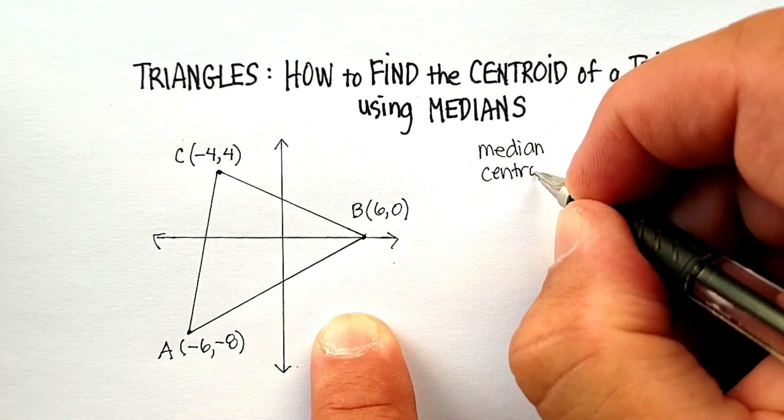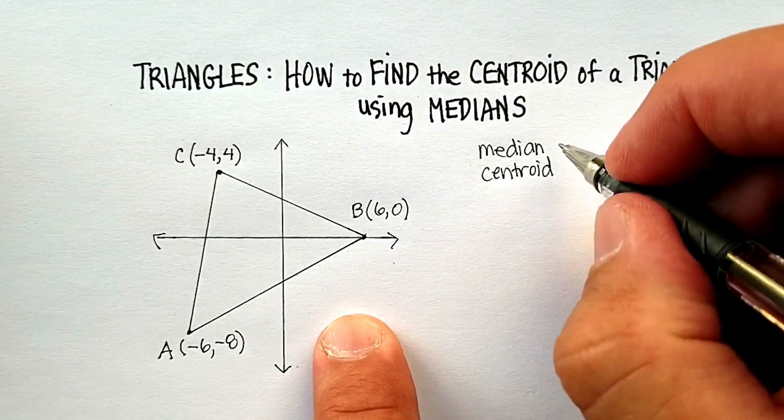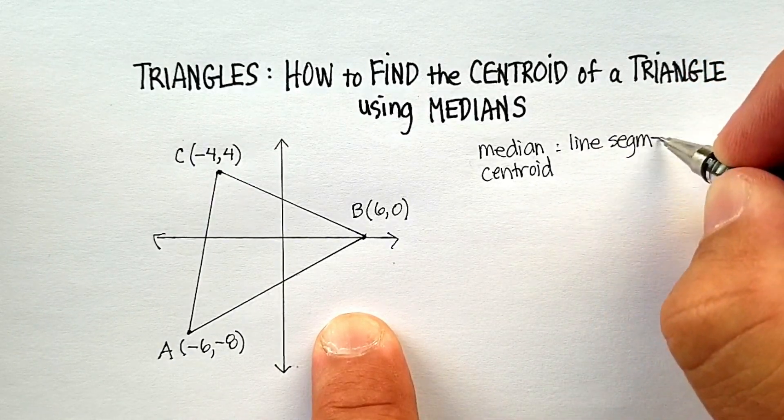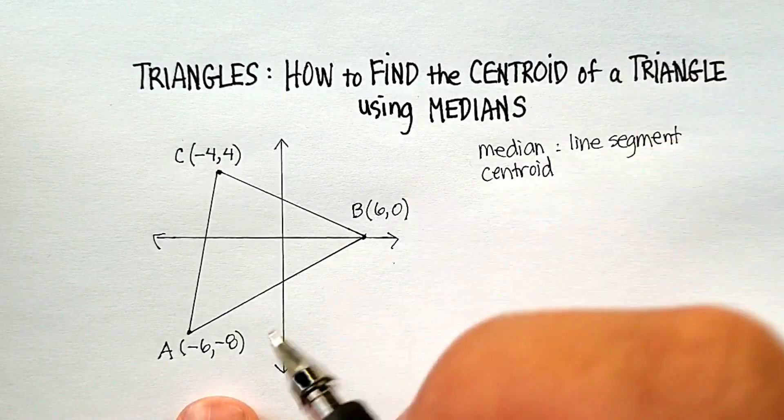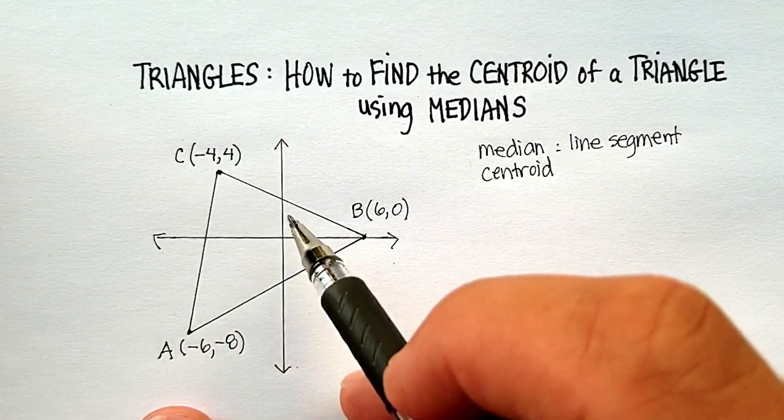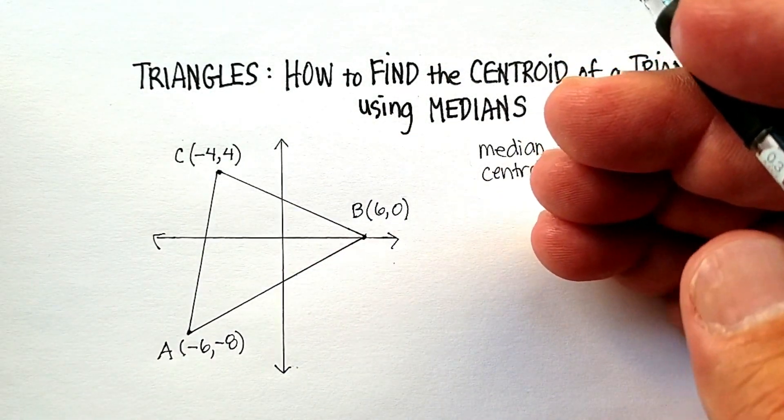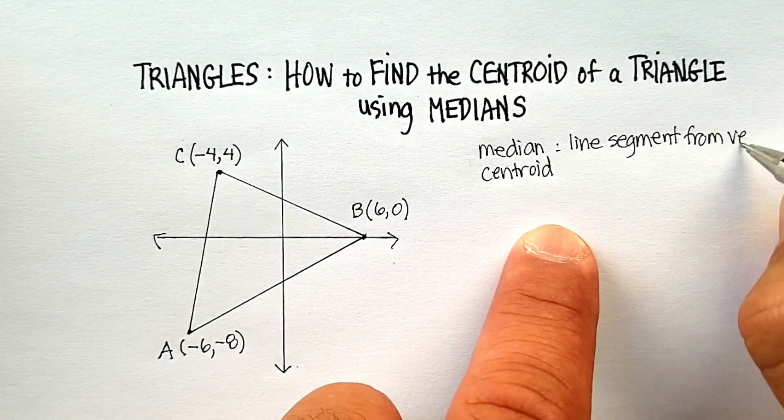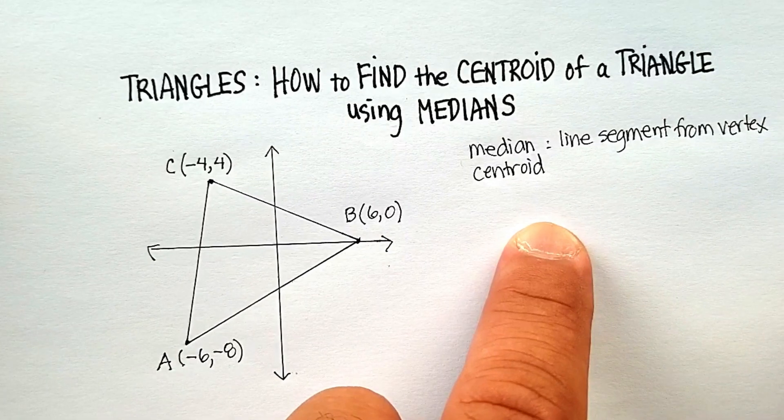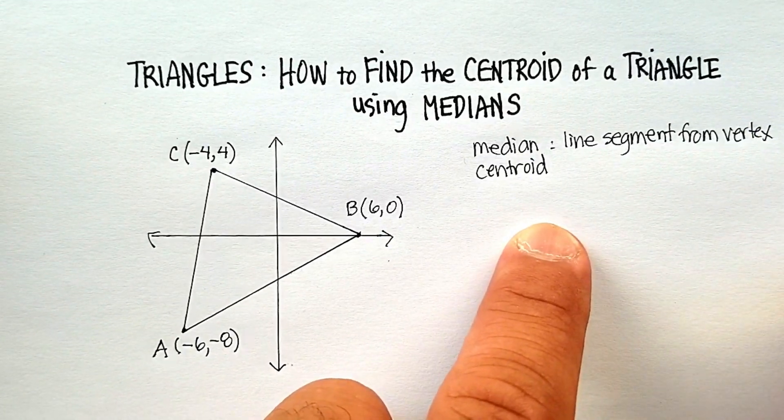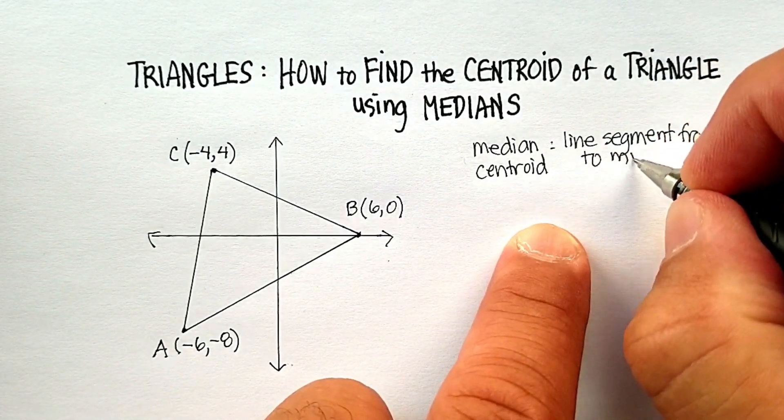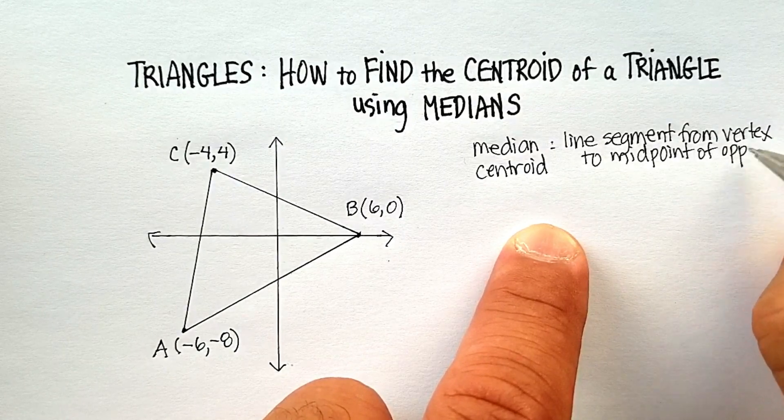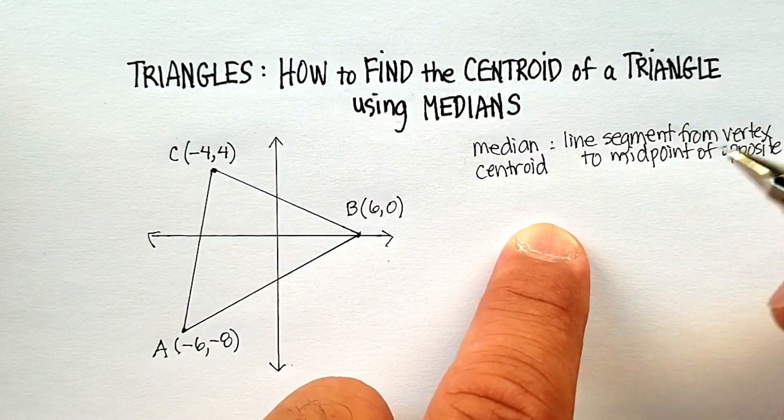So, a median is a line segment, let me write this down, so it's a line segment, which means it has a beginning, an end point, and a starting point. It's drawn from the vertex of a triangle to the midpoint of the opposite side. So, it's a line segment from vertex to midpoint. Let me just write this up here correctly. Basically, to midpoint of the opposite side of opposite, we're out of room here, opposite side.